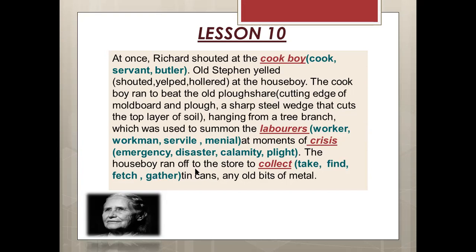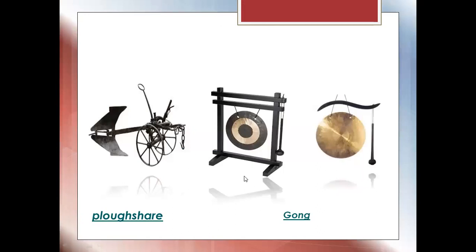These are the images of two things. This is the plow share — 'hal ka phala' or 'hal ka dhaar' — which I mentioned in the previous slide. It was hanging and the cook boy ran to beat it. This is a gong — as I told you, they make noise to drive the locusts away by beating tin. The gong is a bell-like instrument, and what is used to produce its ringing sound is called a gong. These are two images of the gong.